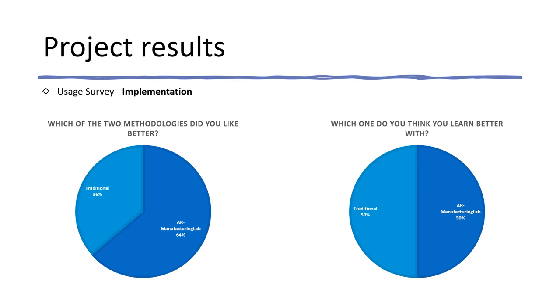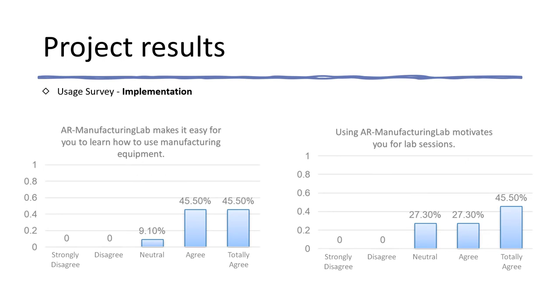Two types of surveys were conducted: one for the implementation and one other for the content development and creation. In these first questions, students were asked how much they liked the traditional model or the use of augmented reality, in addition to being questions about how much they learned. There were also questions about the ease of use and how motivated they were to use it. The results were very good.